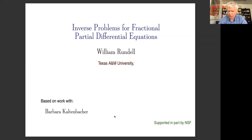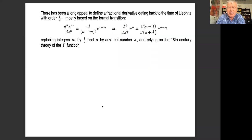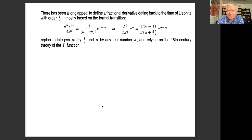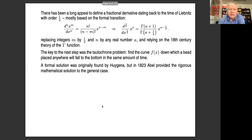There's a long history of fractional derivatives — even Leibniz had issues with this. He came up with a definition based on the standard formula for integer derivatives but didn't know what the constant in front was. That constant was verified in the next century by Lagrange, who was master of the gamma function. This formula actually appeared in textbooks in the early 18th century for fractional derivatives.